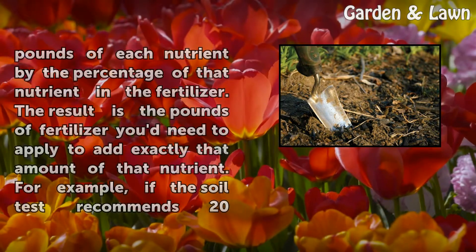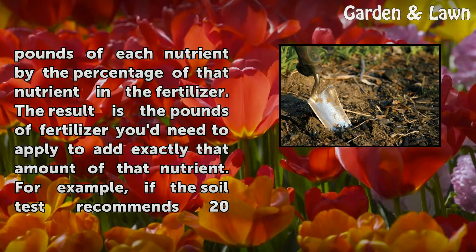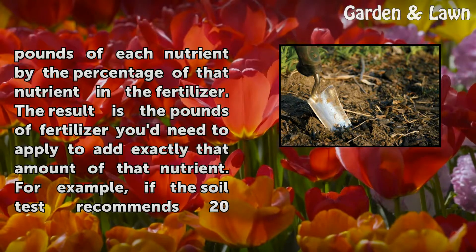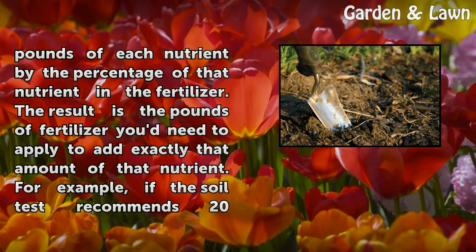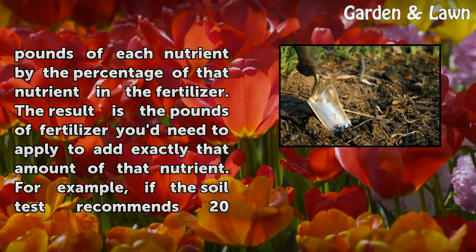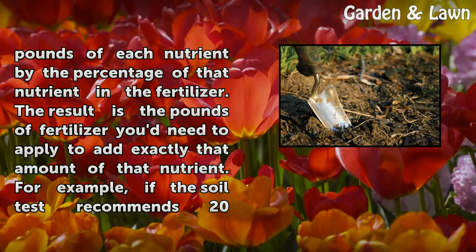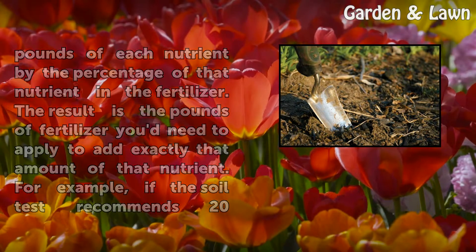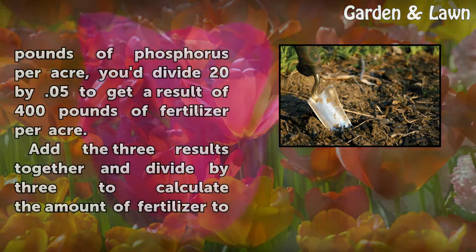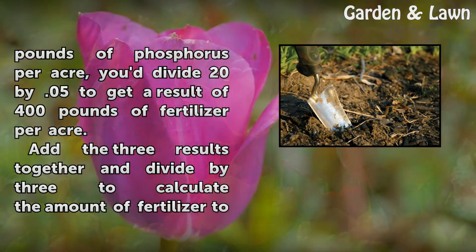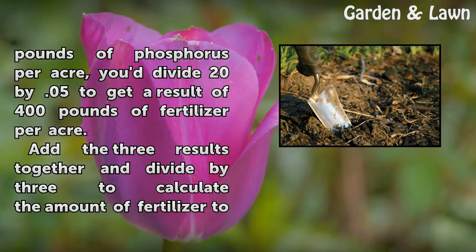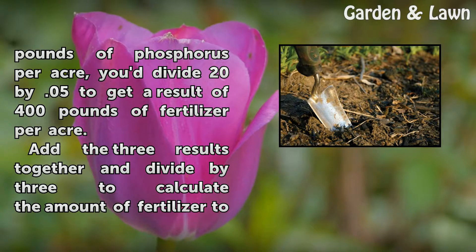Divide the recommended pounds of each nutrient by the percentage of that nutrient in the fertilizer. The result is the pounds of fertilizer you'd need to apply to add exactly that amount of that nutrient. For example, if the soil test recommends 20 pounds of phosphorus per acre, you'd divide 20 by 0.05 to get a result of 400 pounds of fertilizer per acre.